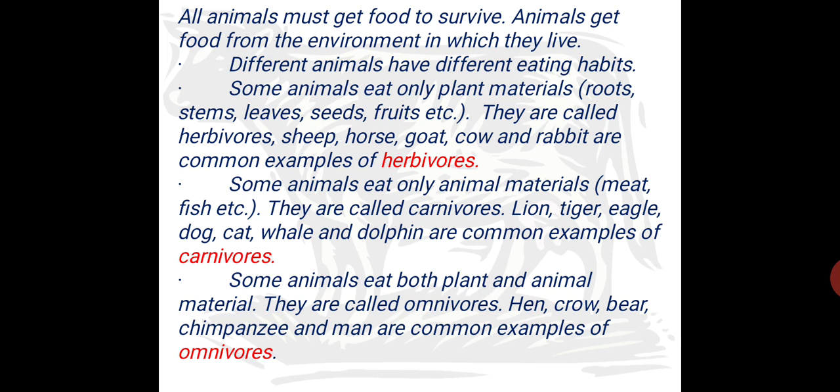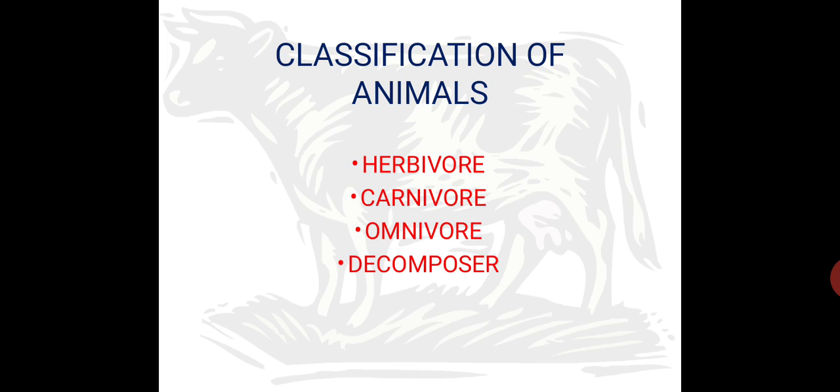Some animals eat both plants and animal material — they are called omnivores. Crow, bear, chimpanzee and man are common examples of omnivores. Because we human beings, some people among us live only on plants and some among us eat both — they eat plants, vegetables, fruits as well as flesh of other animals. So here, on the basis of that, we can classify animals in three categories: herbivore, carnivore and omnivore.